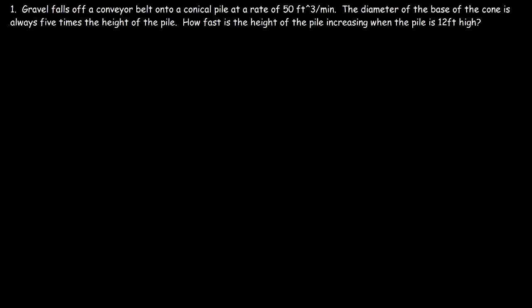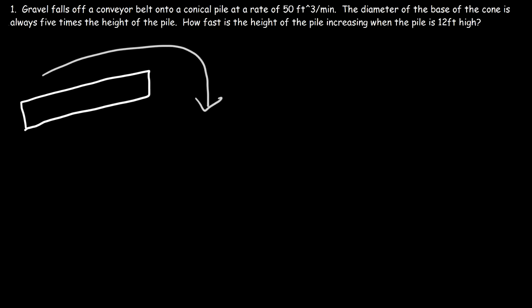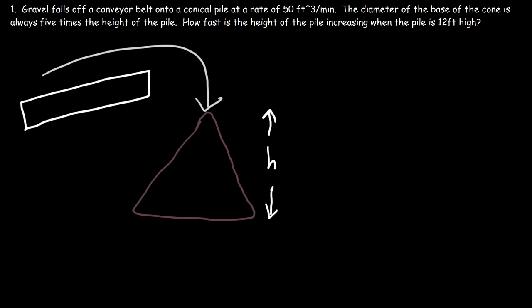Let's work on this related rates problem. Gravel falls off a conveyor belt onto a conical pile at a rate of 50 cubic feet per minute. The diameter of the base of the cone is always five times the height of the pile. How fast is the height of the pile increasing when the pile is 12 feet high? Let's draw a picture first — the conveyor belt drops sand that forms a conical pile.